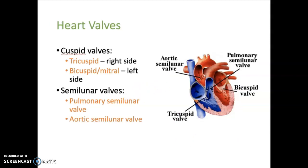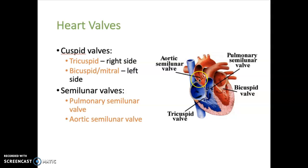There are two sets of valves within the heart. The cuspid valves are located between the atria and the ventricles. The tricuspid valve is on the right side, between the right atrium and the right ventricle. The bicuspid, also known as the mitral valve, is on the left side, between the left atrium and the left ventricle. There are also semilunar valves at the entrance to the two major blood vessels that exit the heart — the pulmonary semilunar valve at the entrance to the pulmonary arteries, and the aortic semilunar valve at the entrance to the aorta.